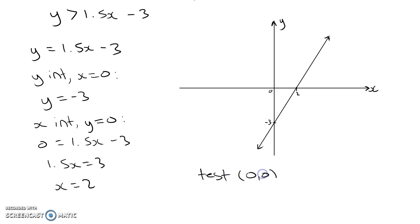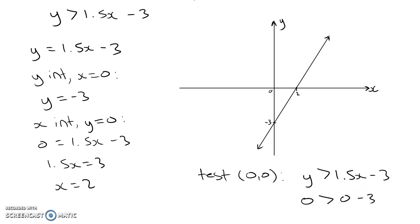Test the coordinates 0, 0 to see if those coordinates satisfy our inequality. So I'll write out our inequality again: y is greater than 1.5x minus 3. If we substitute in 0, 0, we'll get 0 is greater than 0 minus 3, or in other words, 0 is greater than minus 3. Now that is true.